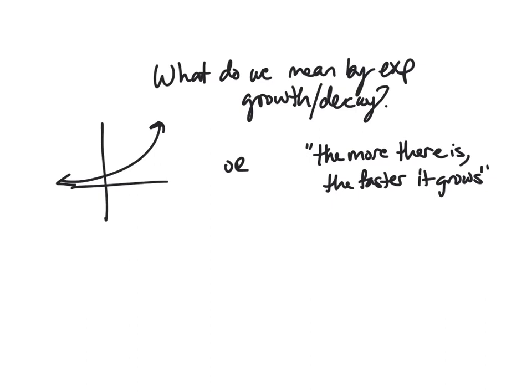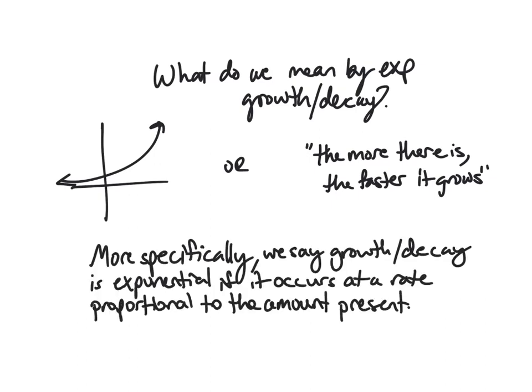And if you try to put that into words, like what's really going on there, especially if you think back to biology where you've seen this in bacterial growth or something, like the more that there is, the faster it grows. So let's try to be a bit more precise. More specifically, we say that growth or decay is exponential if it occurs at a rate proportional to the amount present. So these are the kind of words you're looking for when you're thinking exponential growth or decay, like this rate proportional to the amount present.